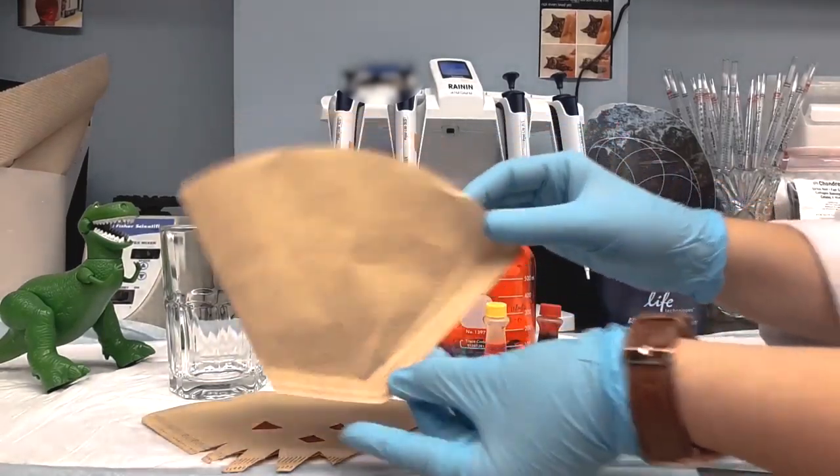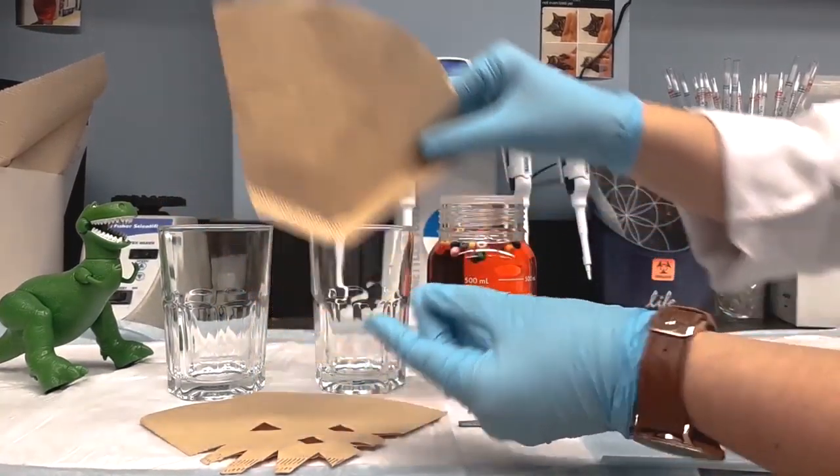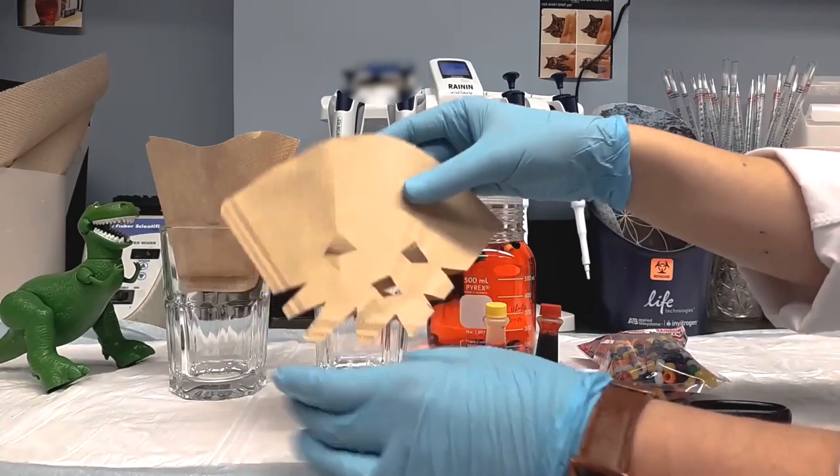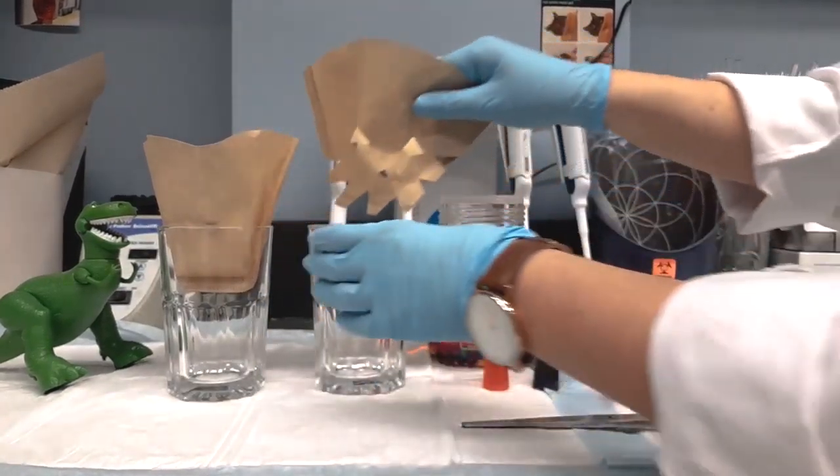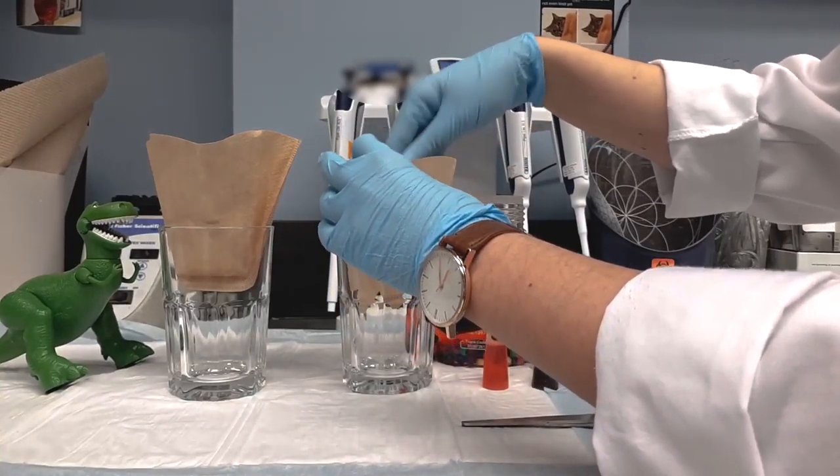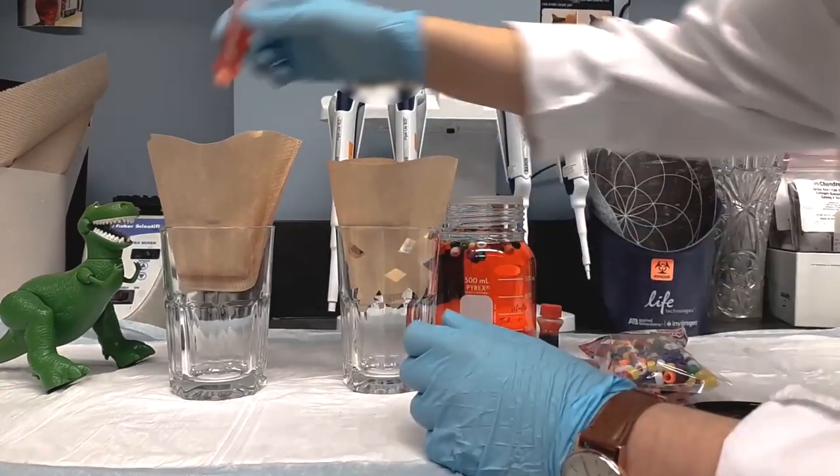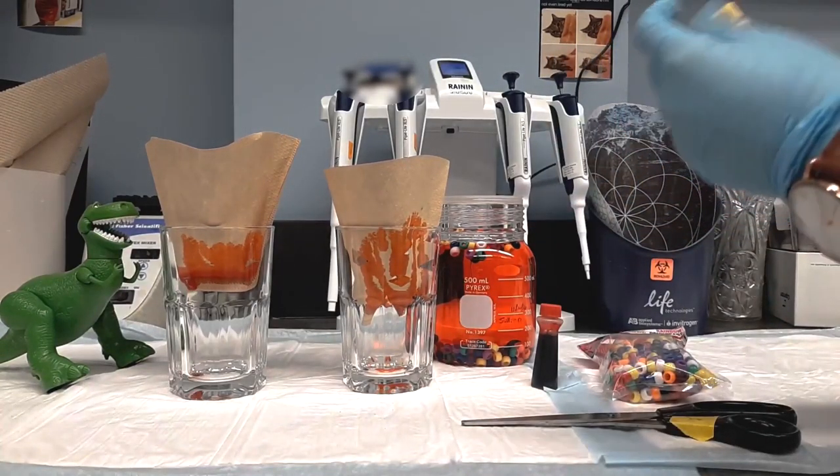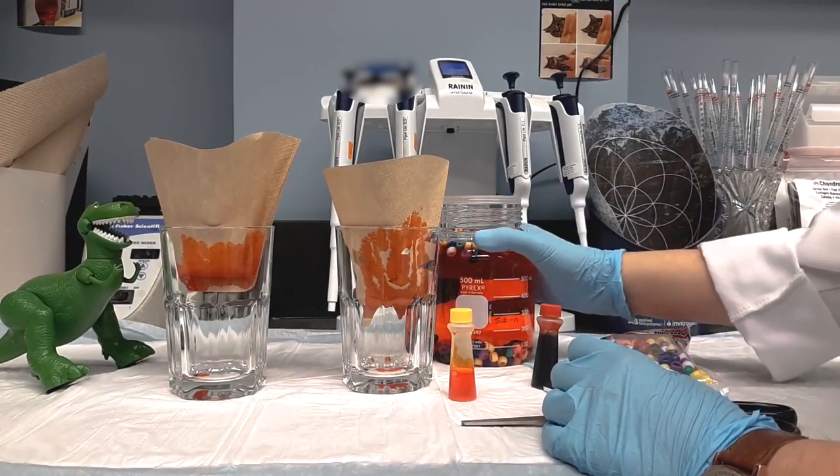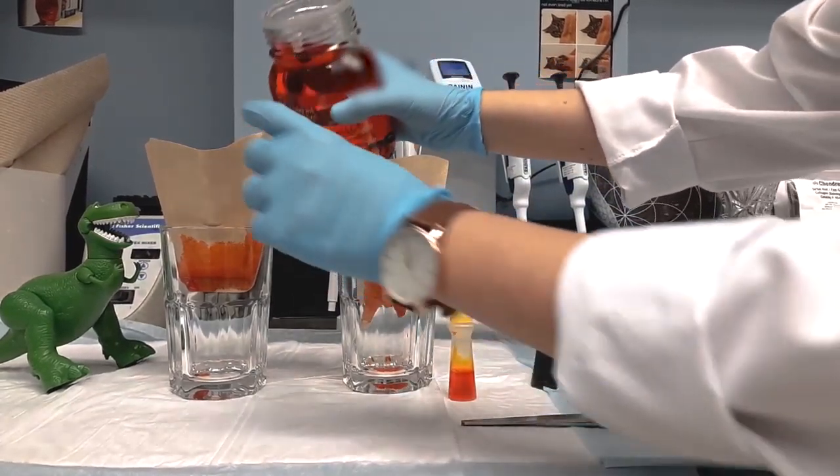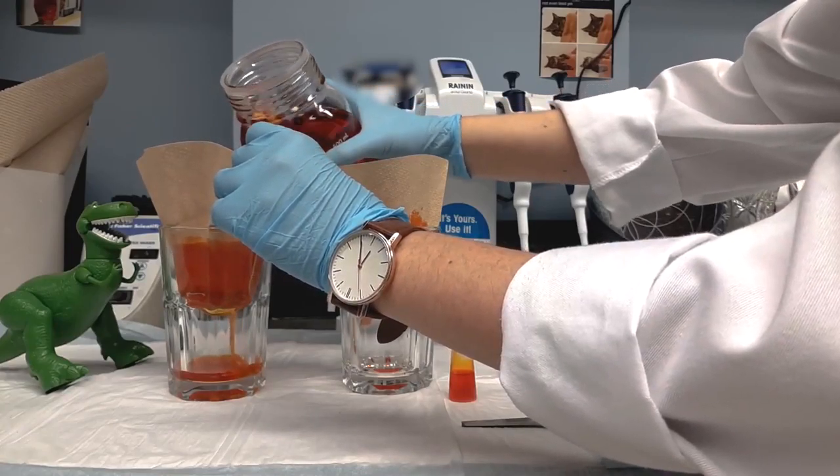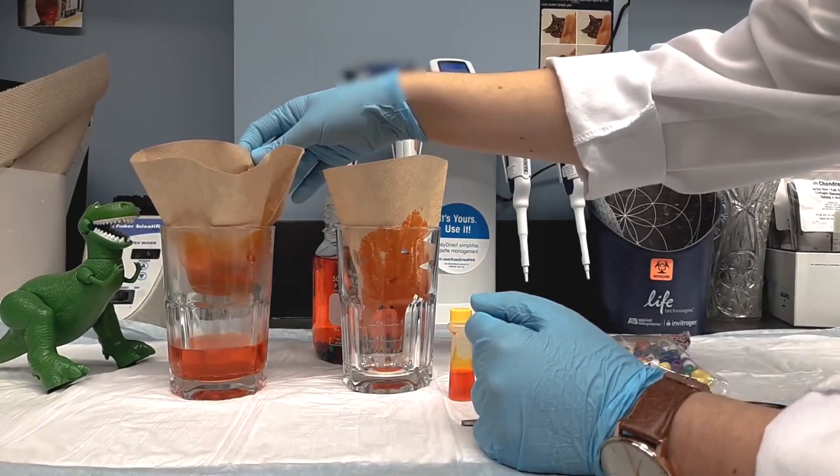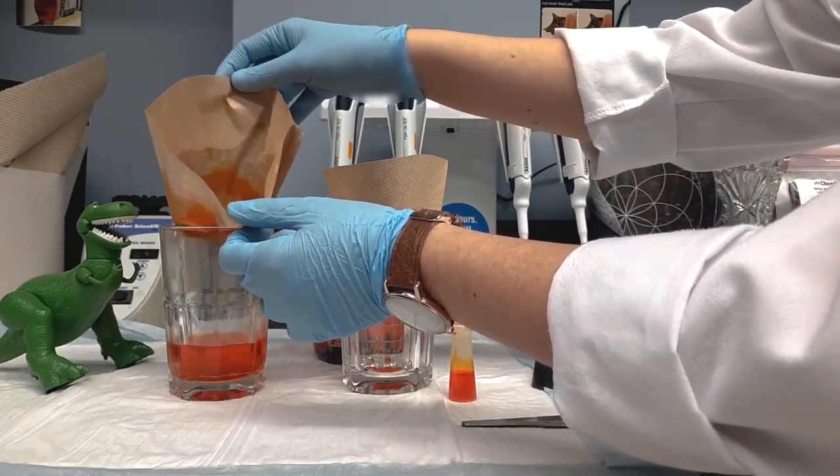Next, we're going to use these coffee filters like they're our kidneys. This is going to be our healthy kidney, and this is going to be a sick kidney. Earlier, we cut holes in it, and that's why you'll need the scissors. Let's add just a little bit of yellow food coloring. Now, let's add the blood to our healthy kidney. The healthy kidney filters out all the bad waste, the pee, and keeps in all the proteins, all the good nutrients that your body needs.